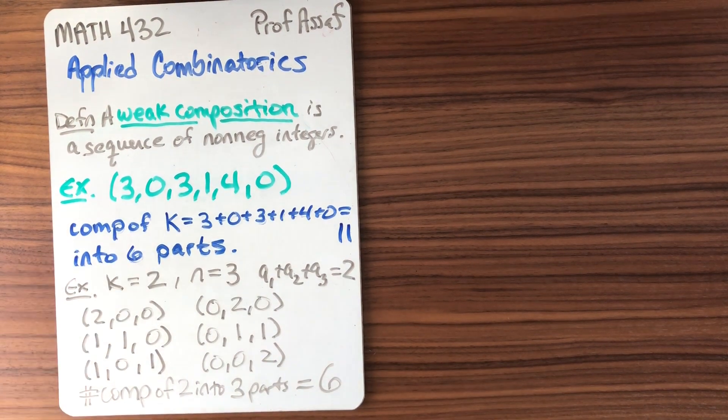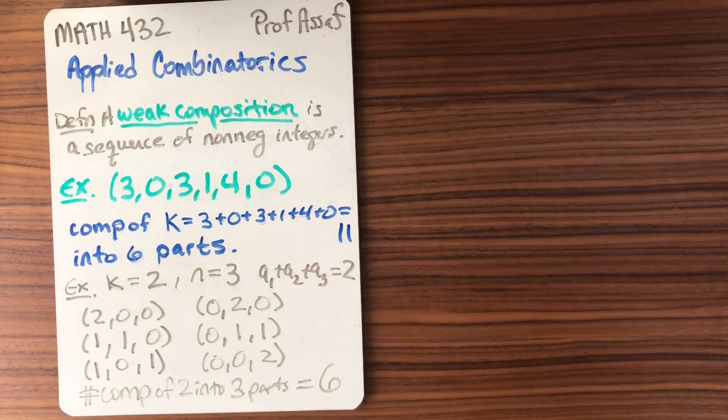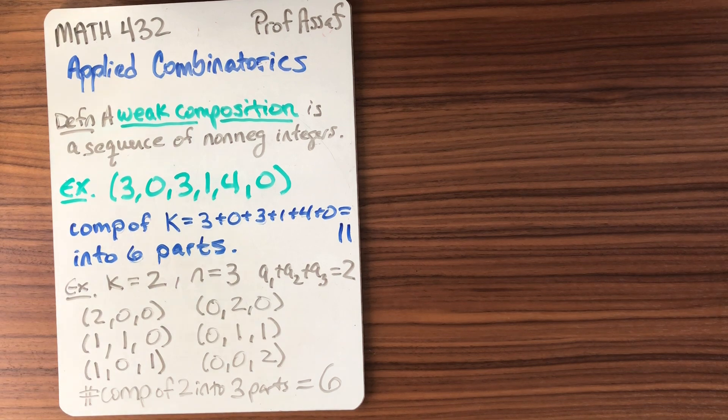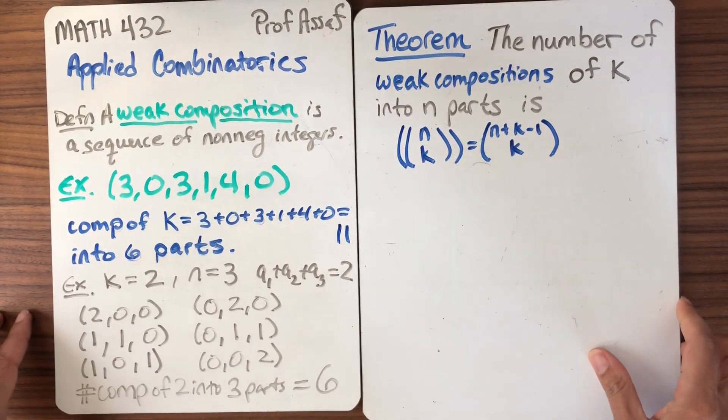Now we've seen the number 6 so many times. So we want to think to ourselves, what does that mean? What is the number 6? Well, 6 could be 3 factorial and it could be 4 choose 2. And in fact, in this case, it's actually 4 choose 2.